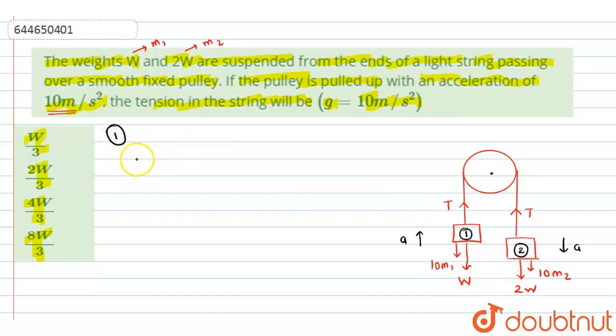So now let me write the equations for both the blocks. So we have, let's say this is block 1 and this is block 2. So for block 1, I will have T minus 10 m1 minus w must be equal to m1 into a. And for block 2, I can write the equation as 2w plus 10 m2 minus T equals to m2 into a.